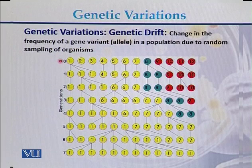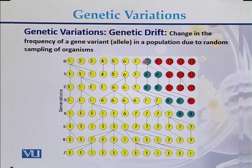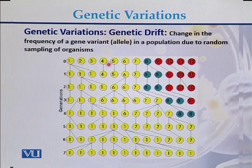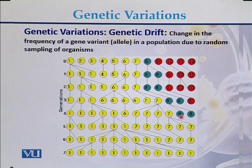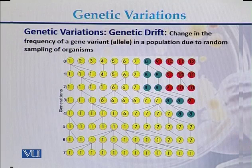In the first generation we can see three alleles: allele one marked with yellow, allele two marked with gray, and allele three marked with red. By generation four, the red allele disappeared. By generation five, the gray alleles also disappeared. So genetic drift is another reason for genetic variations.